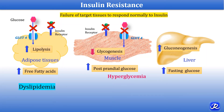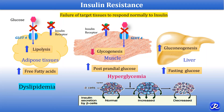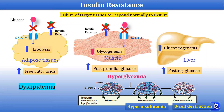Due to insulin resistance there is hyperglycemia, and in response the beta cells of the pancreas start producing more insulin, leading to hyperinsulinemia. However, after some time, free fatty acids cause destruction of beta cells. So hyperinsulinemia combined with insulin resistance, followed by destruction of beta cells of the pancreas, leads to hypoinsulinemia, and with low insulin there will be more hyperglycemia and type 2 diabetes mellitus.